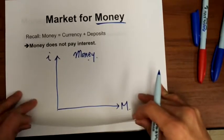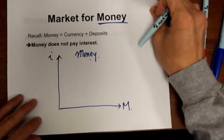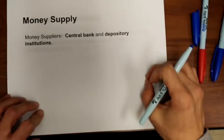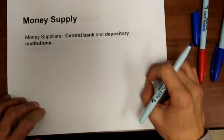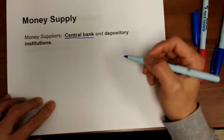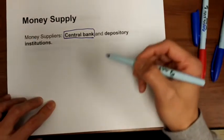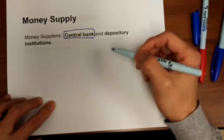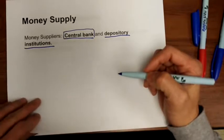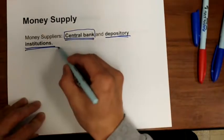Before you draw a supply curve, you have to know who the suppliers are. So who are the money suppliers? The central bank is the one who prints money, so they are a money supplier. But in this chapter, we are going to spend a lot of time talking about how depository institutions are also money suppliers. So money suppliers include the central bank and depository institutions.